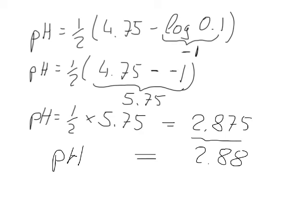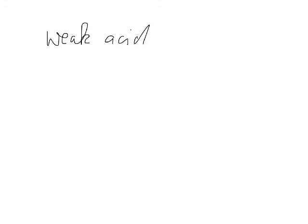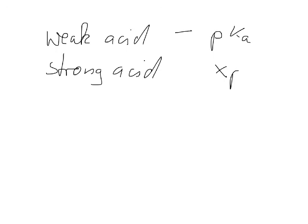How do you know whether something is a weak acid or a strong acid? The general rule is that for a weak acid you will usually have been given a pKa, whereas for a strong acid you don't have a pKa given, because you assume that everything dissociates. I hope this makes sense and shows you how you can calculate the pH of a weak acid quite easily. Thank you for watching.